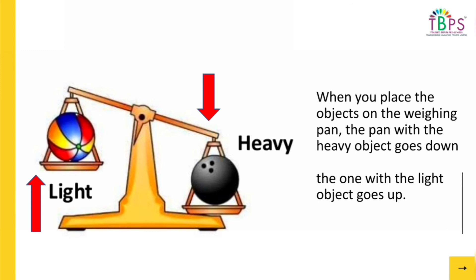Children, when we play on a seesaw, we go up and down — that's only because of our weights. If you're heavier and you put a lot of pressure, you go down and the lighter person goes up. And that is how the seesaw keeps going up and down.